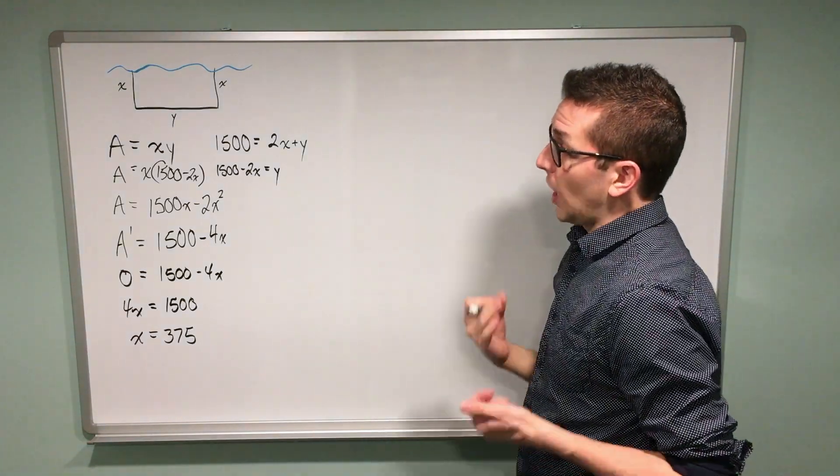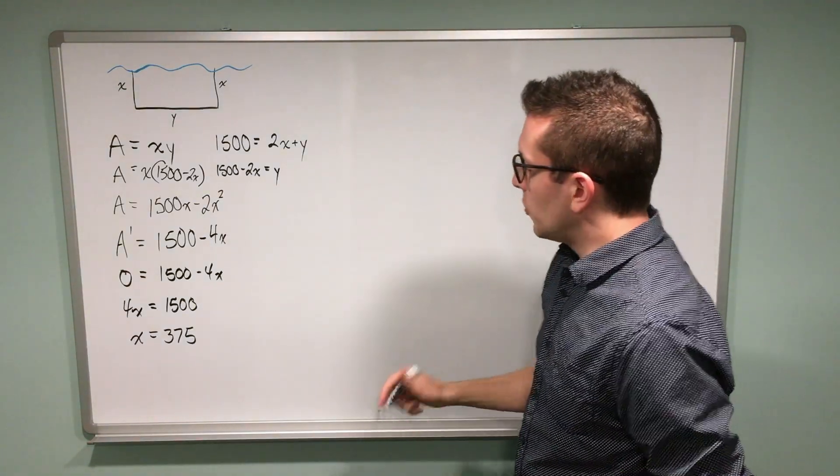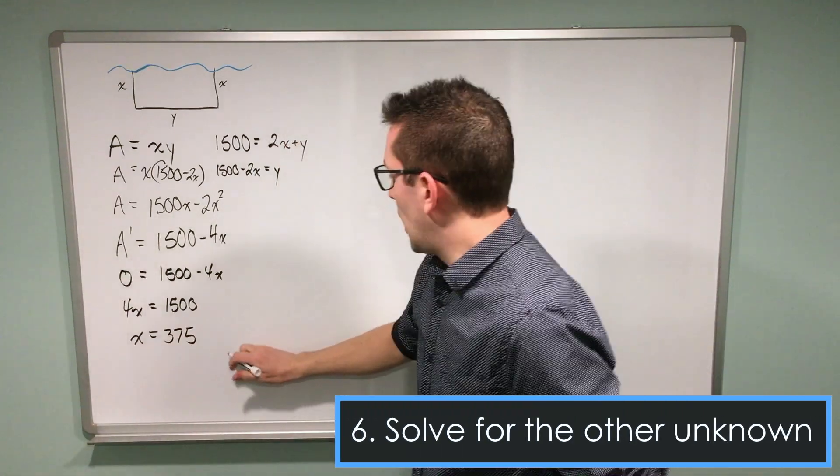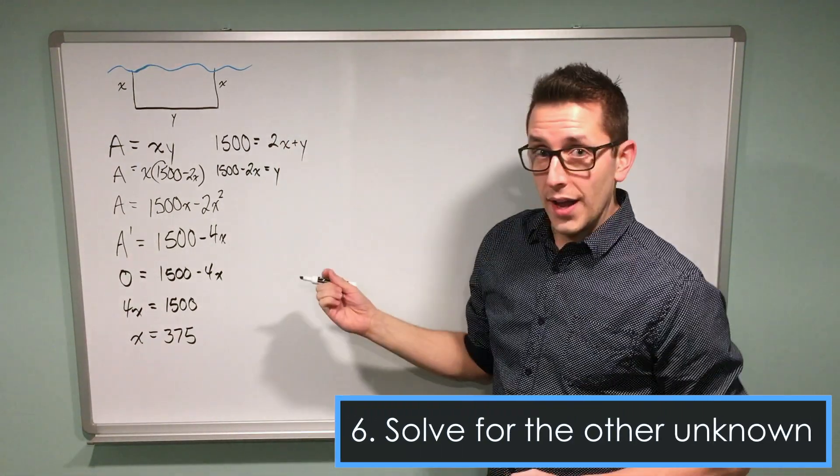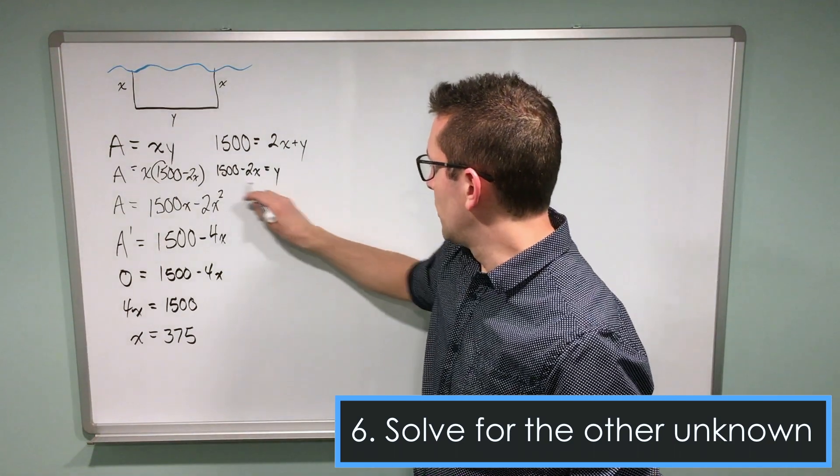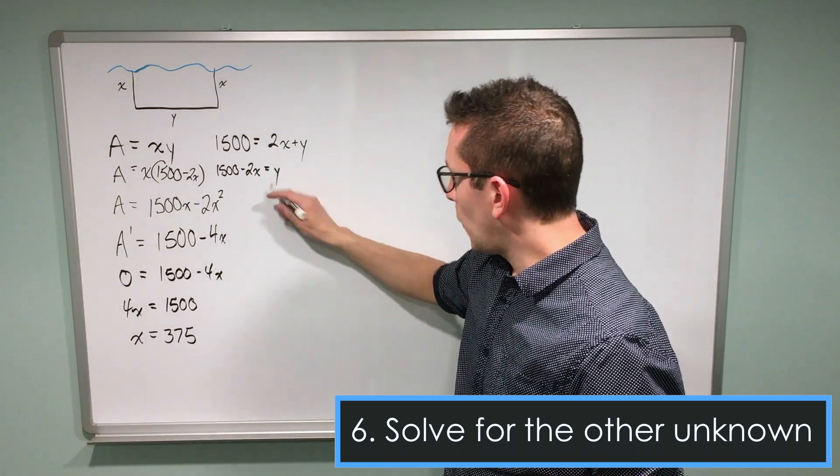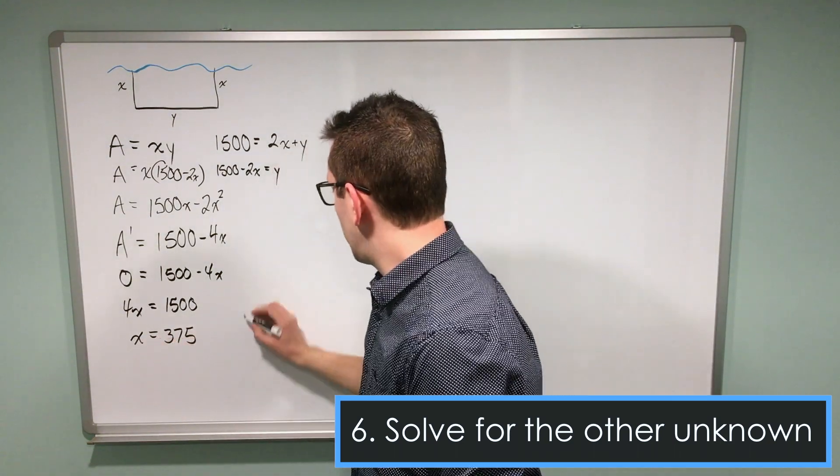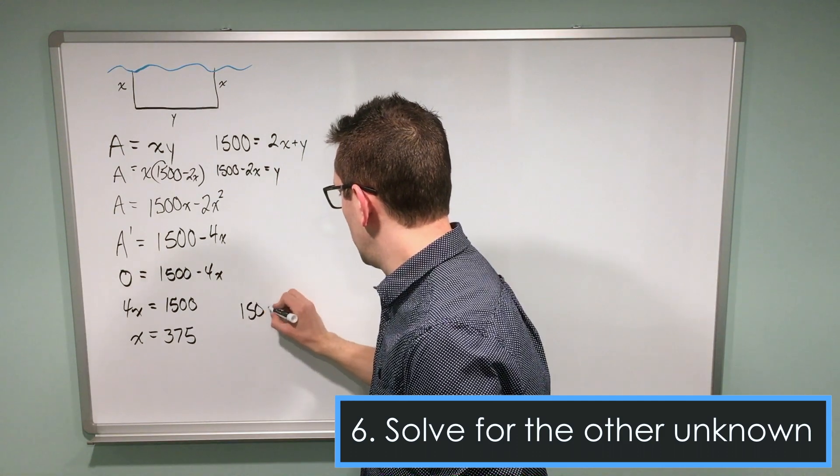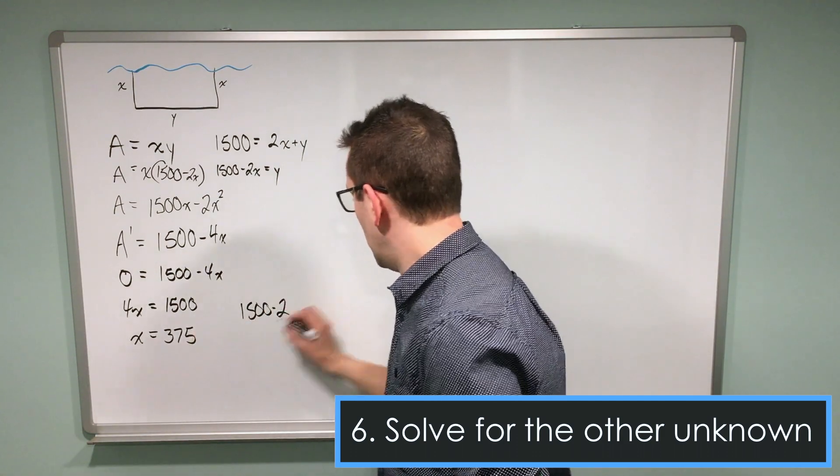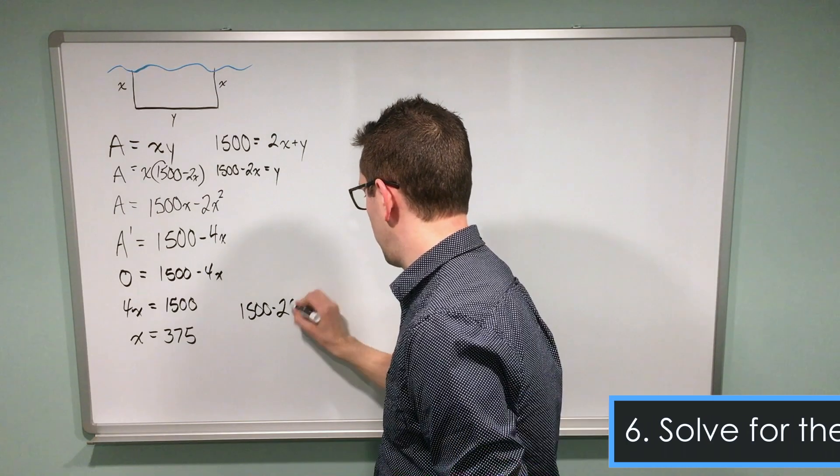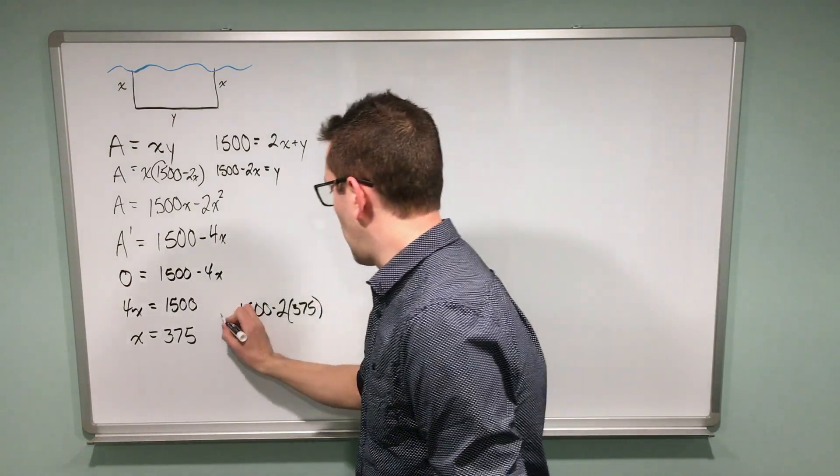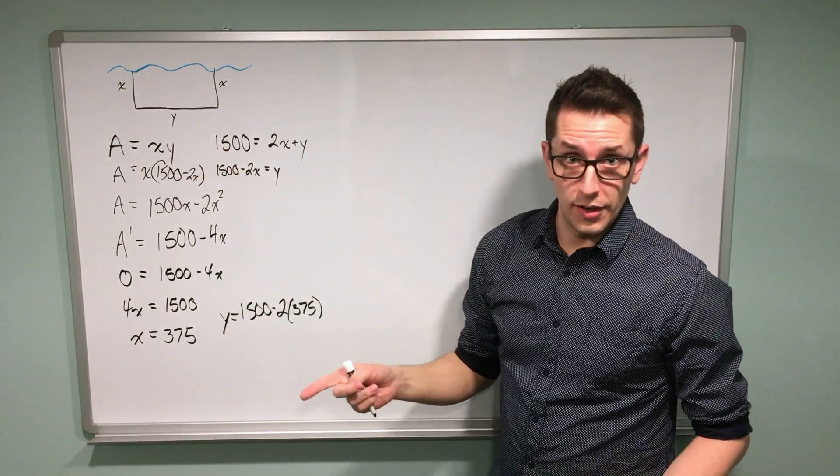Now the question asks for the dimensions. So what I'm going to do is take this x value and go back and look for an equation for y. I have 1500 minus 2x equal to y. So why not just take this x value and replace the x in this equation with 375? That will tell me the y value, or the length of my rectangle.